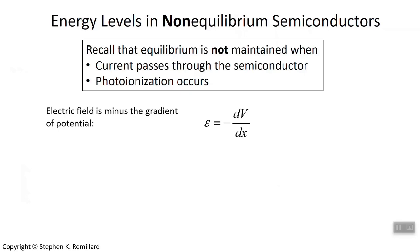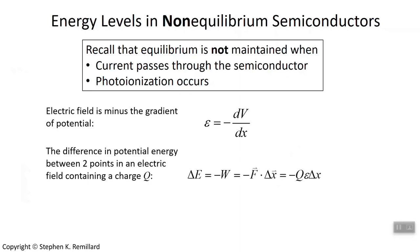When you are not in equilibrium, the Fermi energy may not be horizontal. So when you are not in equilibrium, this nice expression that n_i, the intrinsic carrier concentration, equals square root of np does not really hold. So we have to start to look at what's going on outside of equilibrium.